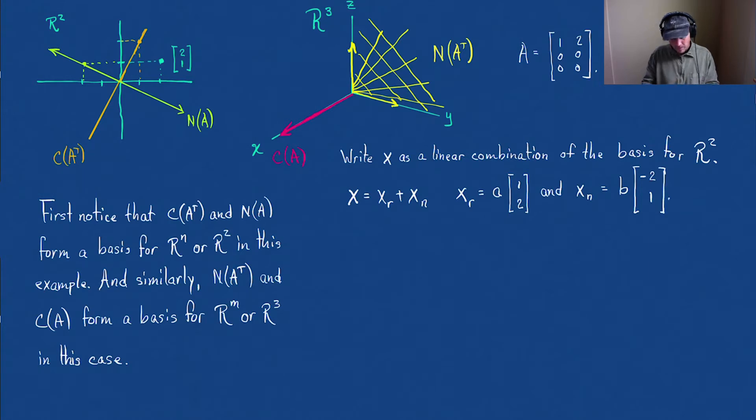OK. So in other words, what we want to do is we want to write the vector 2, 1 as a linear combination of something in the row space plus something in the null space. Well, we have that. So our X_r we just said is the vector, it's some A times the vector of 1, 2, plus the vector B times minus 2, 1.